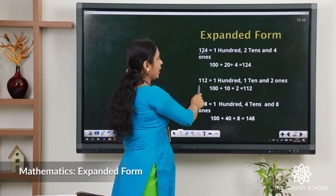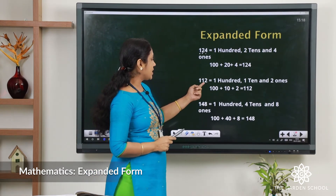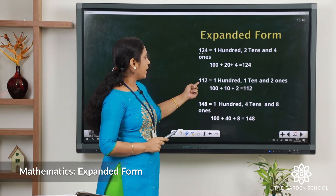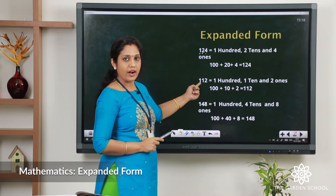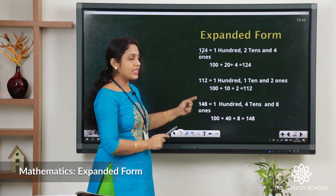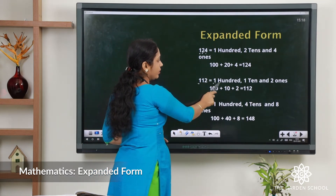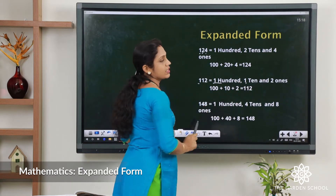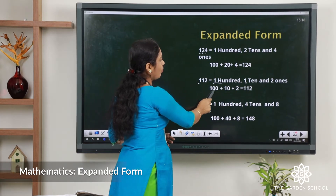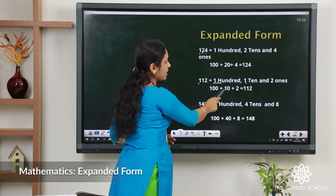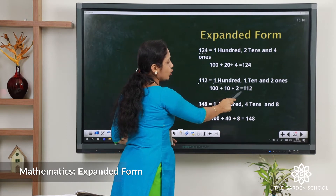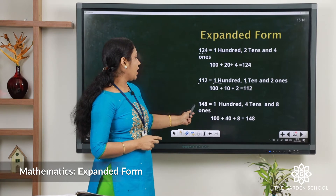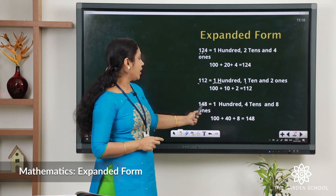Next: 112. In this we can see 2 comes in the ones place, 1 in the tens place, and 1 in the hundreds place. So we can write it as one hundred, one ten, and two ones — that makes 100 plus 10 plus 2 equal to 112.